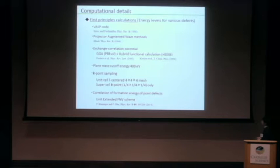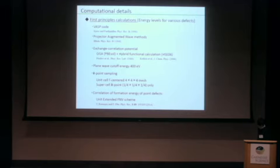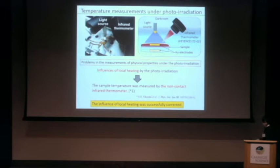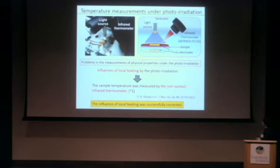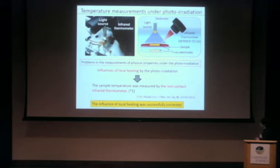The energy levels for various defects in lanthanum aluminate are calculated by first-principles calculations. I will briefly introduce a measurement problem: the influence of local heating by photo-irradiation. In this work, we employed a non-contact infrared thermometer. This picture shows the homemade photo-directed measurement system using the infrared thermometer, with which the influence of local heating was successfully corrected.